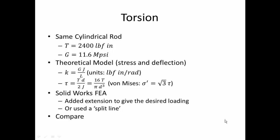Now looking at torsion on the same cylindrical rod: applied torque T = 2,400 in-lb; shear modulus G = 11.6 Mpsi; torsional stiffness K = GJ/L (units: in-lb/rad) where J is the polar second moment of area. Shear stress τ = Tr/J = 16T/(πD³). For pure torsion (plane stress), von Mises = √3 · τ.